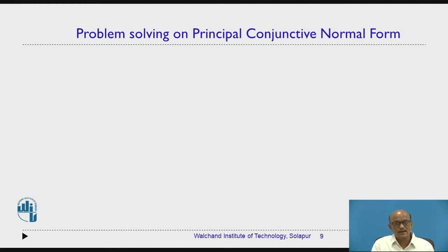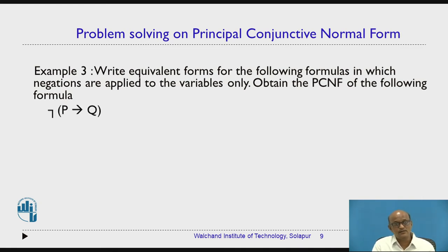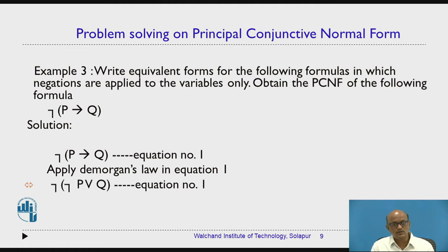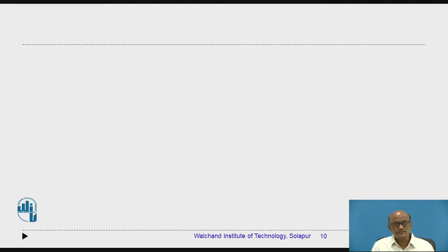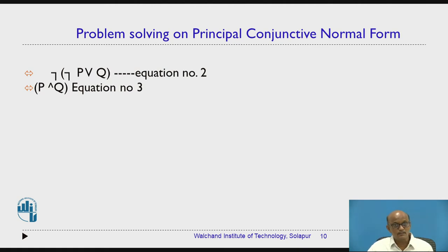Let us focus on the third example. The question is the same: write equivalent forms in which negations are applied to the variables only, and obtain PCNF of the given formula. The formula here is negation of bracket P conditional Q. To obtain normal forms, we need to remove the conditional connective by substituting an equivalent formula. Let this be equation number 1. Apply De Morgan's law to P conditional Q, which becomes negation P or Q. The formula becomes negation of bracket negation P or Q — this is equation number 2.